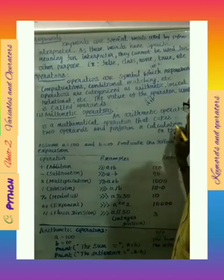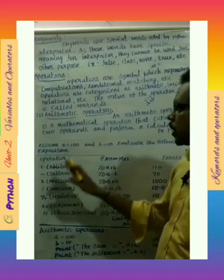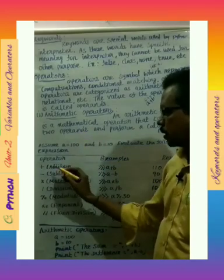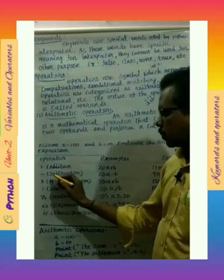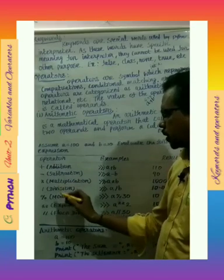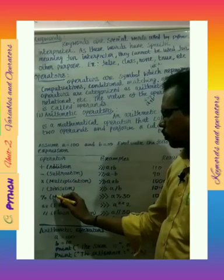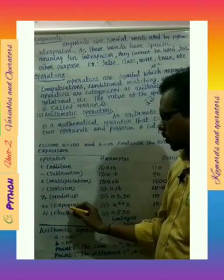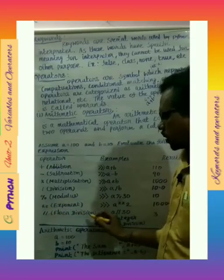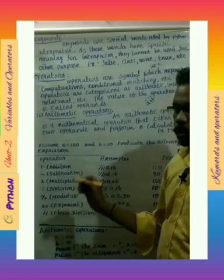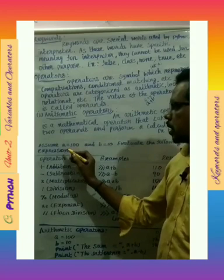Arithmetic operators perform calculations on two operands. They include: addition, subtraction, multiplication, division, modulus, exponent, and floor division. Now we can do some calculations using example values where a equals 100 and b equals 10.